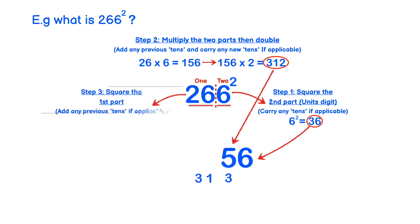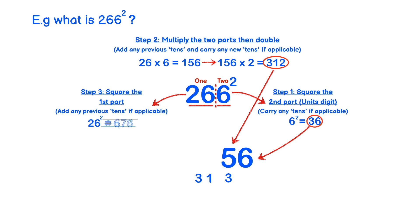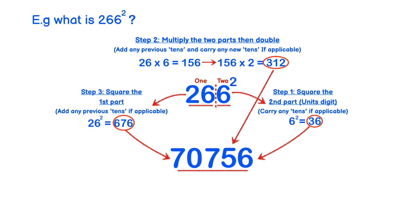In step 3, we square the first part and add any previous tens if applicable. In this case we have 26 squared. Using the same technique as how to square any two-digit number, 26 squared becomes 676. Adding 31 to that gives us 707. So the final answer is 70756.